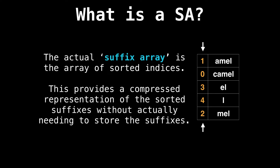The actual suffix array is the array of sorted indices highlighted in orange. We do not need to actually store the suffixes themselves if we know where the suffix begins in the original string. This is an ingenious idea — it provides us with a compressed representation of the sorted suffixes without physically storing the suffixes themselves. All we need is the original string and the array of associated indices.